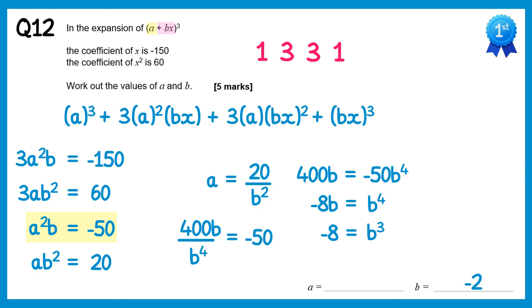Now we've found b we just need a. Substituting b equals negative 2 back into ab² = 20: a times negative 2 squared equals 20, so 4a equals 20, giving a equals 5.